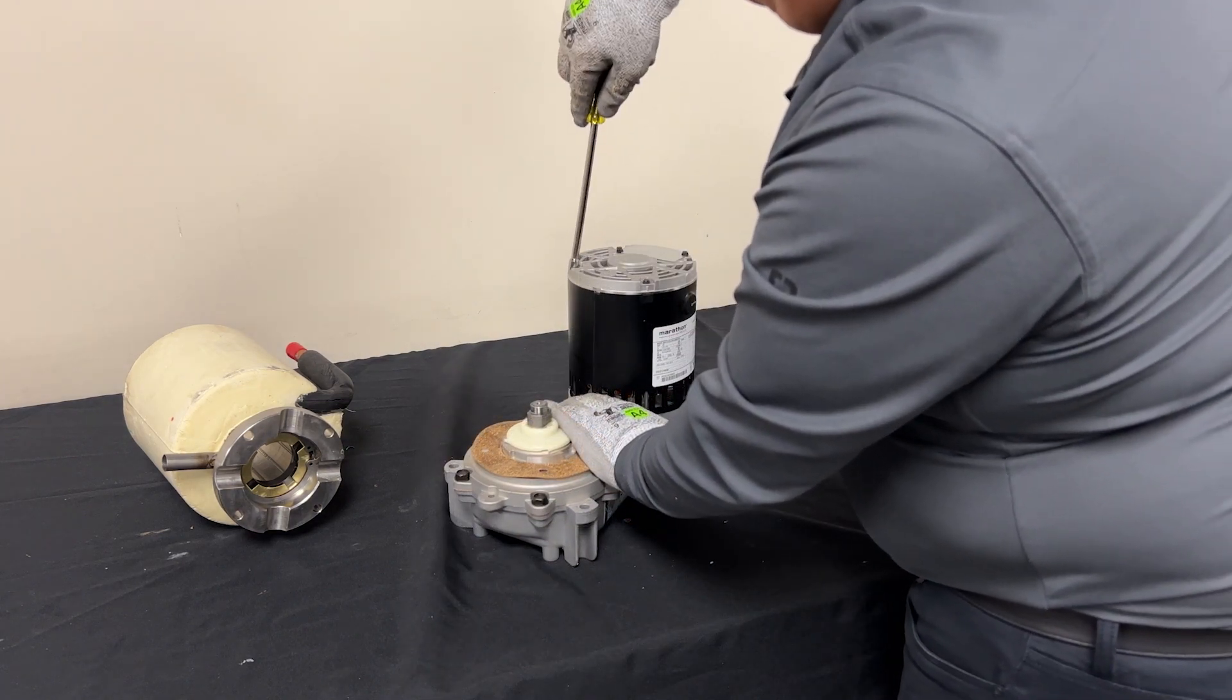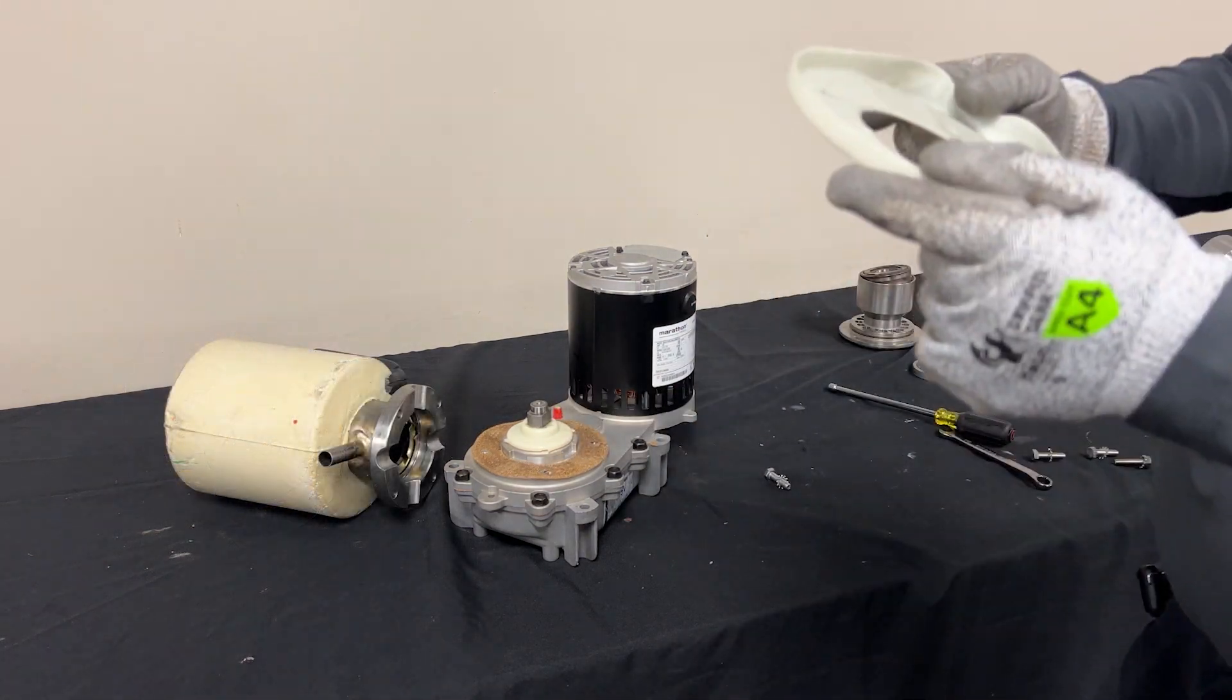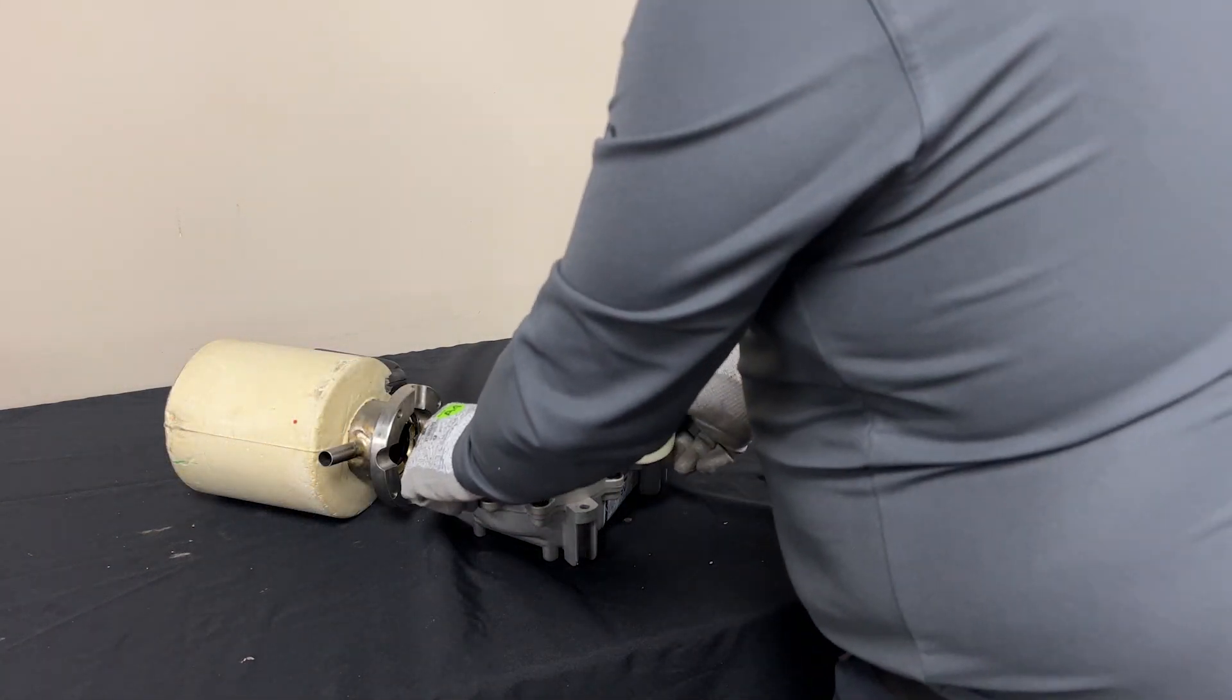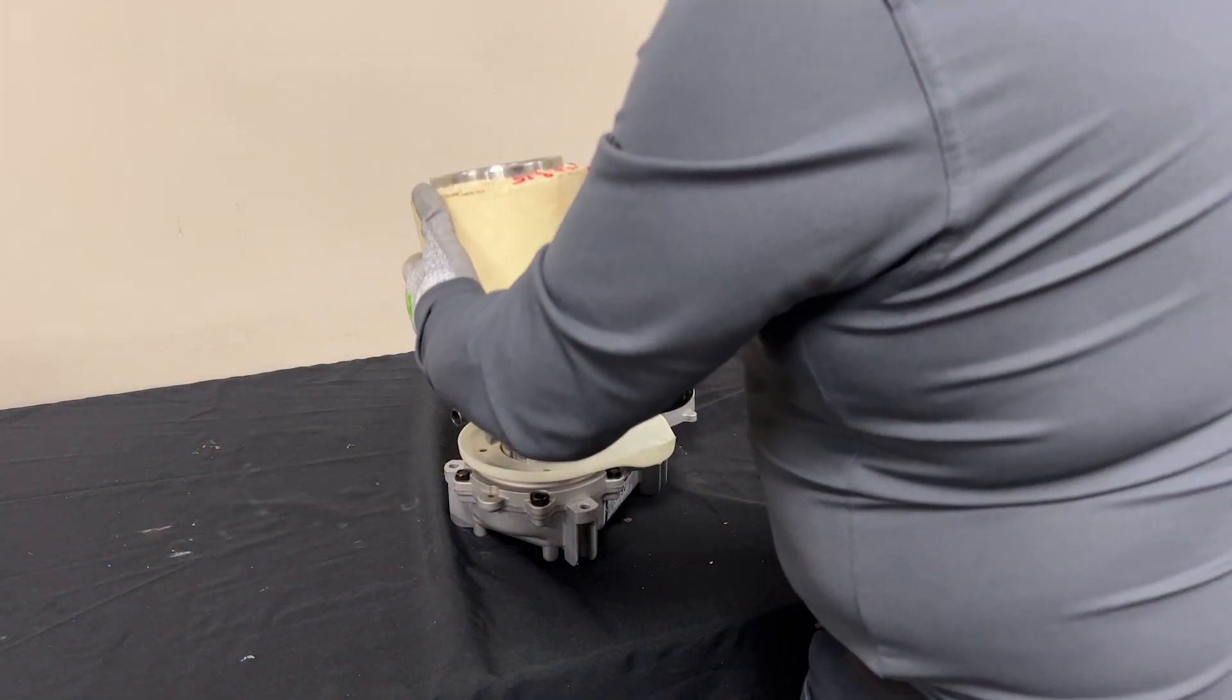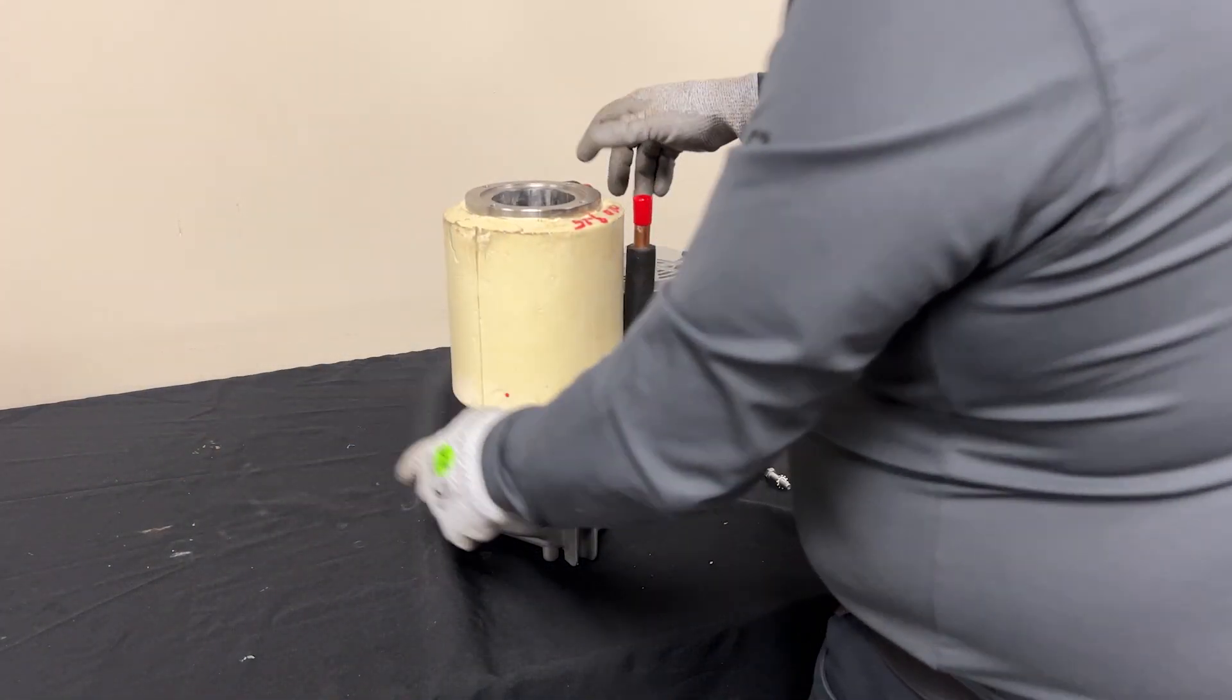I always like to go around and make sure everything is nice and tight. So we want to put in our drip pan. Now we're going to go ahead and take our evaporator and set it in place.